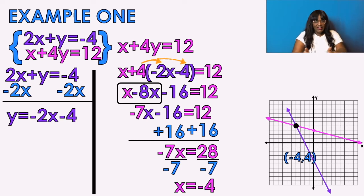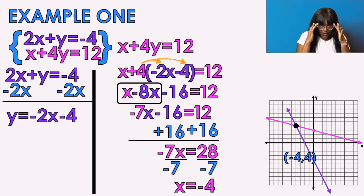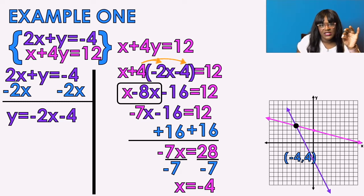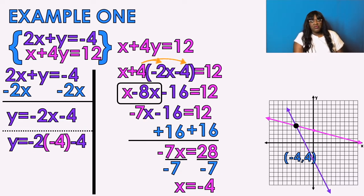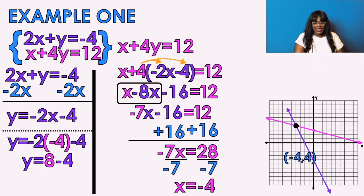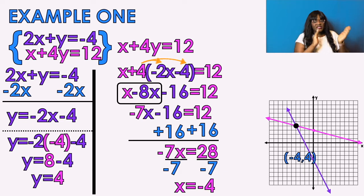Remember there are two parts to your answer. If you get an X, you have to get a Y. So I'm going to take that X equals negative 4 and plug it into either of the original equations — it doesn't matter which one you choose; both will work if you did the problem correctly. I'll use the purple equation. Plugging in negative 4, I get positive 8 minus 4, so Y equals 4. My X value is negative 4, my Y value is positive 4. My answer is (−4, 4).